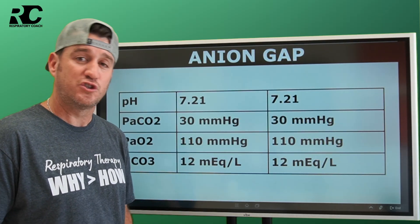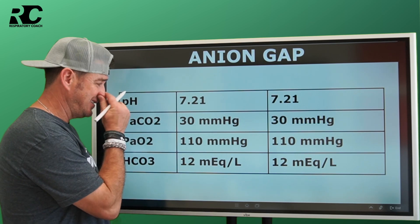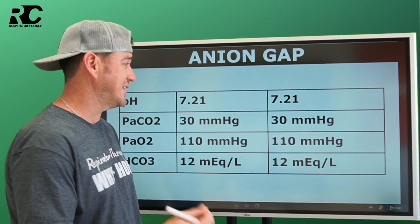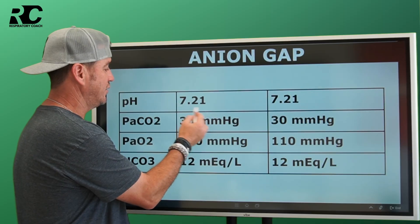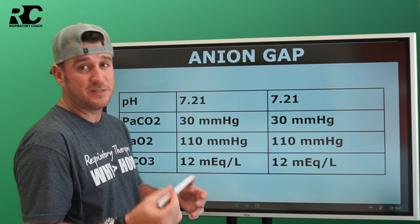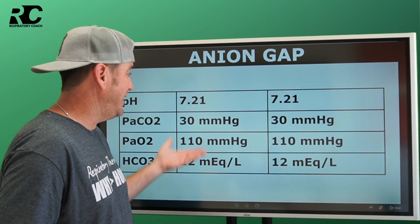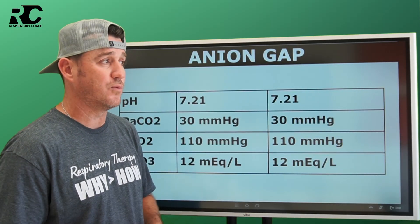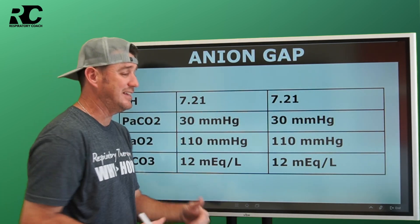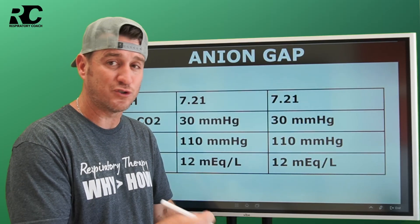On the screen right now there are two blood gases from two separate patients with the same values. The problem is that if you interpret these two blood gases you will get the same answer: an acidosis caused by a low bicarb with a low CO2. Both patients are likely hyperventilating — blowing off CO2 to increase their pH — what we call Kussmaul's respirations.